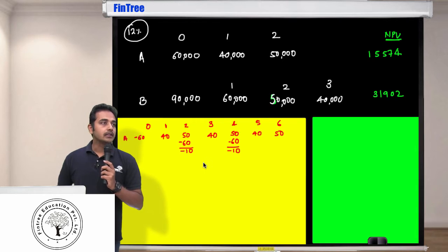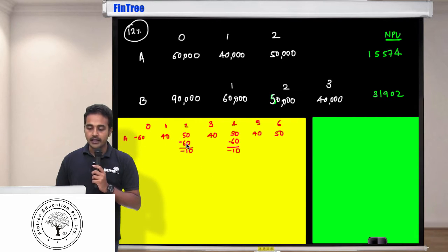The cash flows that you insert while calculation of NPV: minus 60, 40, minus 10, 40, minus 10, 40, 50. Your discount rate is going to be 12 percent, so NPV will come out to be 37,788.